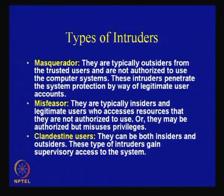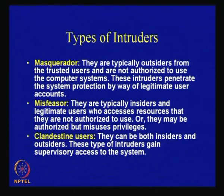There are three types of intruders. Intruders are broadly categorized as masqueraders, misfeasors, and clandestine users. Masqueraders are typically outsiders from the trusted users and are not authorized to use the computer systems. They generally penetrate the system through legitimate user accounts — essentially masquerading attacks, where the attacker tries to mimic or imitate a legitimate user and create attacks in the network.